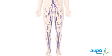This animation shows how deep vein thrombosis, or DVT for short, forms. DVT is a condition where a blood clot forms in a deep vein, usually in the leg.